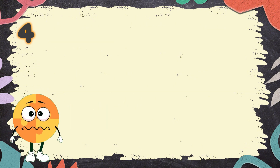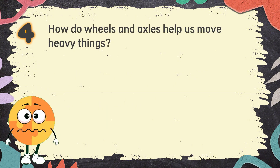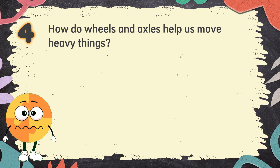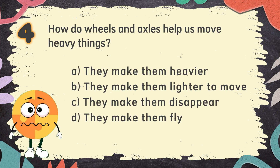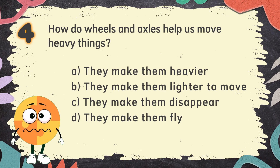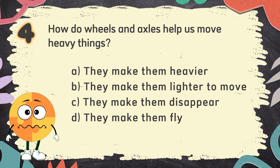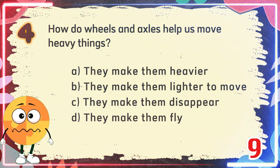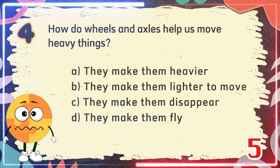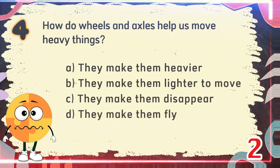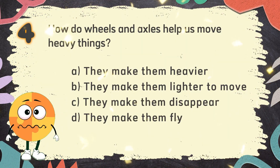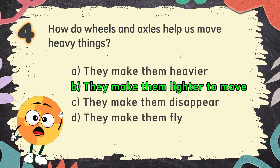Number 4. How do wheels and axles help us move heavy things? The choices are: A. They make them heavier. B. They make them lighter to move. C. They make them disappear. D. They make them fly. The correct answer is B. They make them lighter to move.